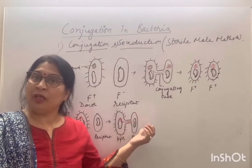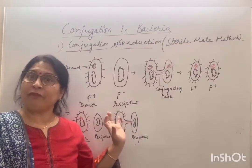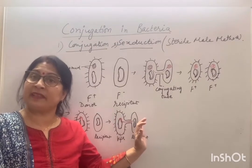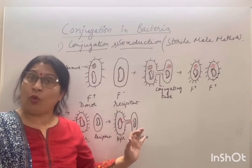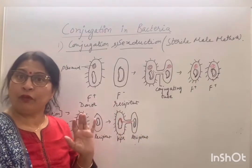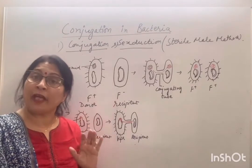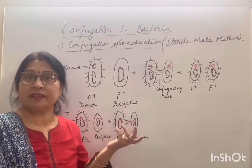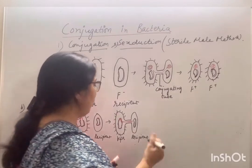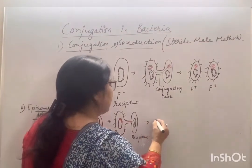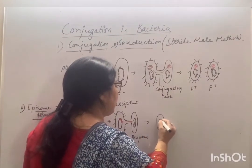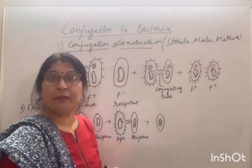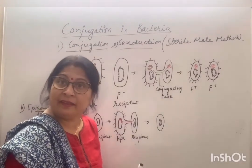Because the full genetic material is not transferred, the fertility factor does not completely enter the recipient cell. Therefore, sex pili will not develop in the recipient, meaning the recipient will not become an F-plus donor cell. The fertility factor has not fully entered, so sex pili formation is not possible.